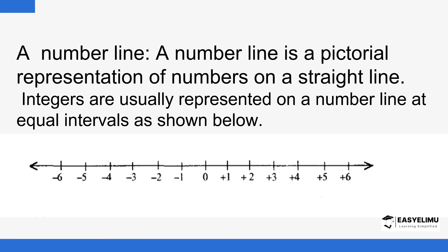So we have something called a number line — it's just a line with numbers illustrated on it. What's a number line? This is a very important tool we're going to use a lot in math. A number line is a pictorial representation of numbers in a straight line. Integers are usually represented on a number line at equal intervals.